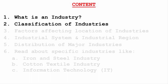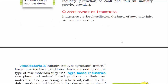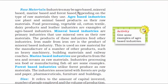The next topic is classification of industries. Industries are classified on the basis of three things: raw materials, size, and ownership. Let us briefly read about each of the factors. First, raw materials. Industries are labeled as agro-based, mineral-based, marine-based, and forest-based, based on their raw materials.